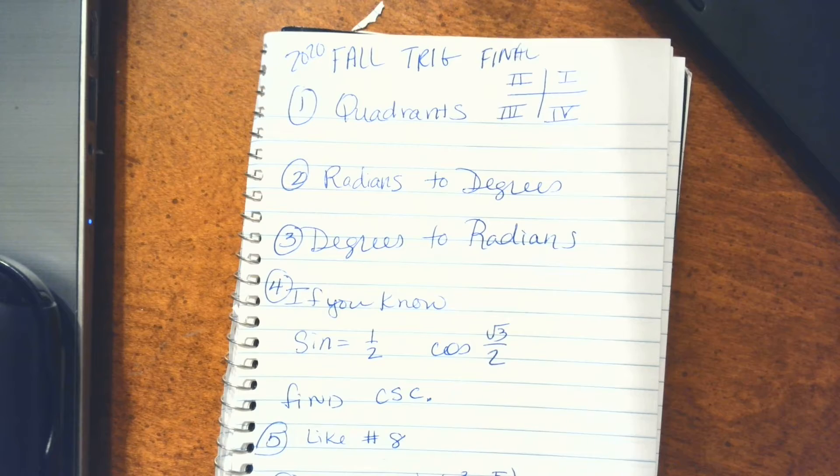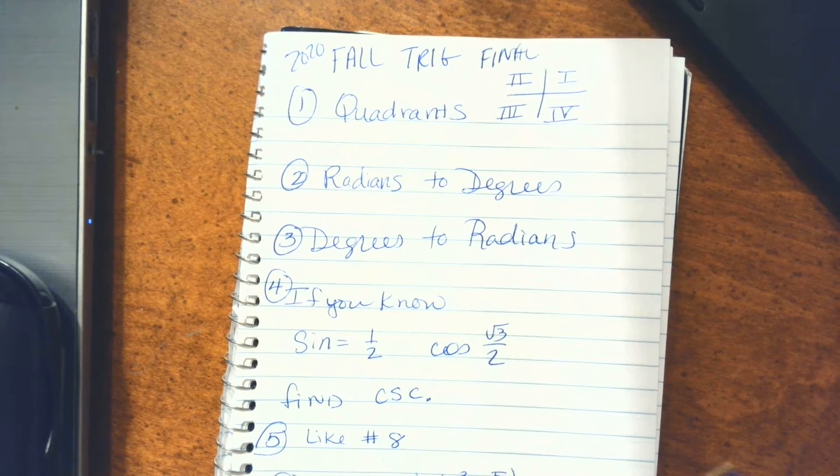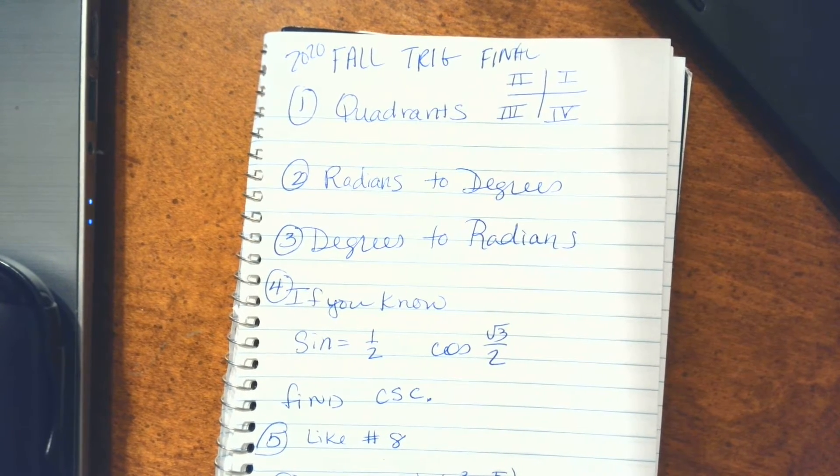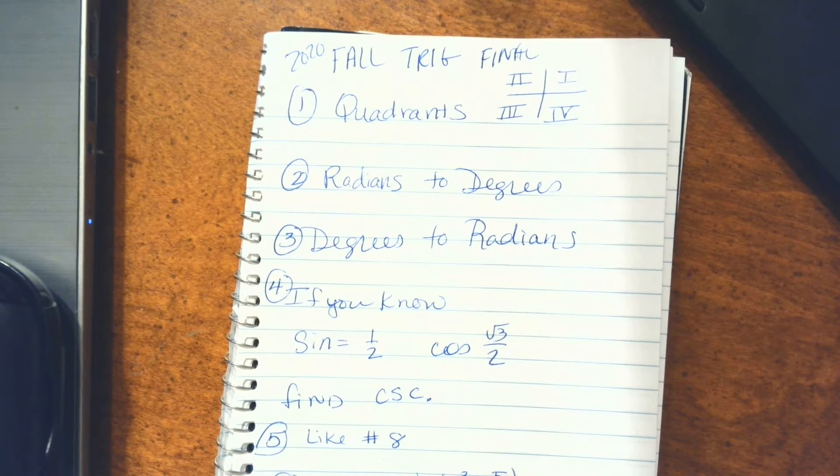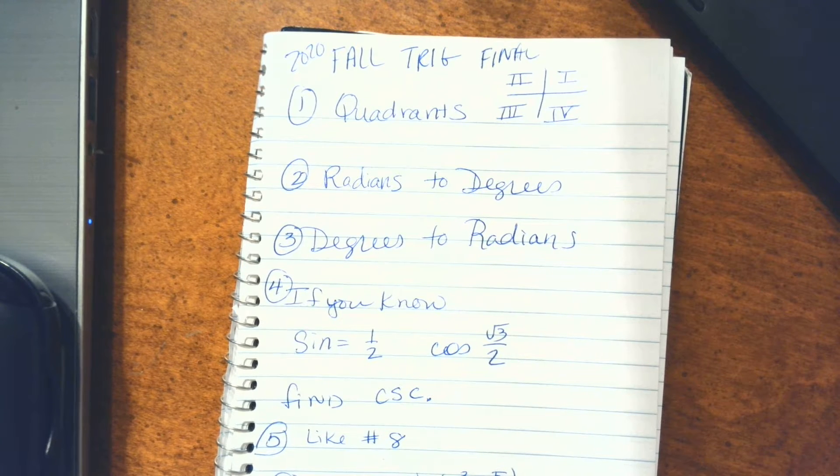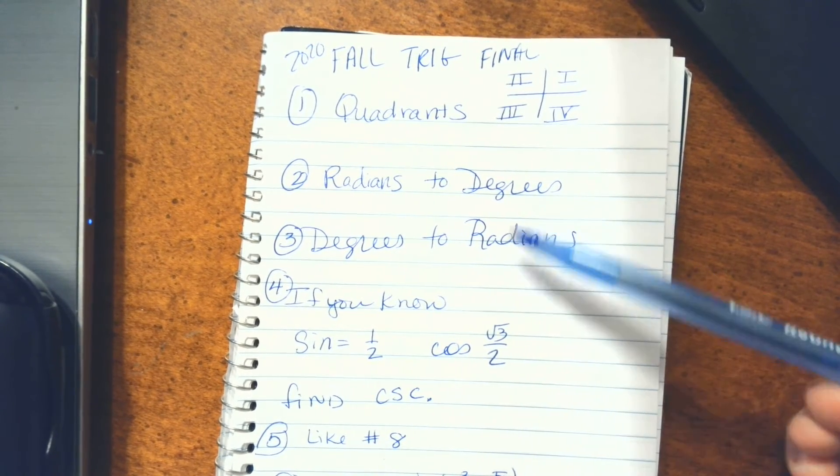Okay, Fall 2020 Trig Final. I went through and looked at the questions and made some notes, and I want to share those notes with you. I want you to know what to expect. The review for the final homework assignment has 52 questions, but the final only has 33. So I want you to do that review—it's really good and very thorough.